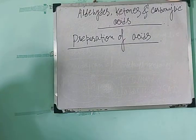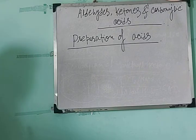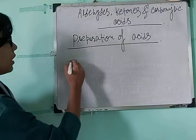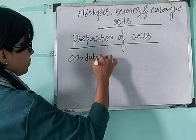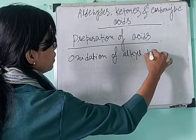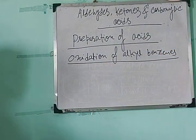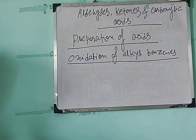Next is by oxidation of alkyl benzene. This part is important — this oxidation process is involved in the preparation of many things in organic chemistry. We will use a strong oxidizing agent like acidified dichromate or alkaline potassium permanganate.